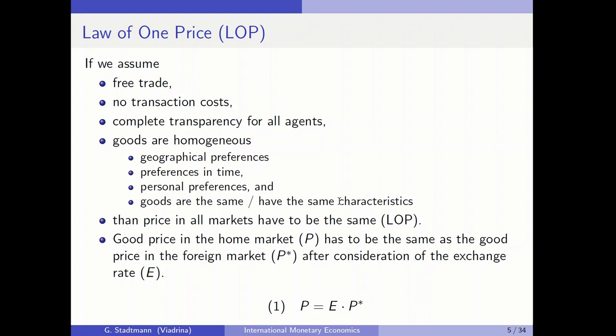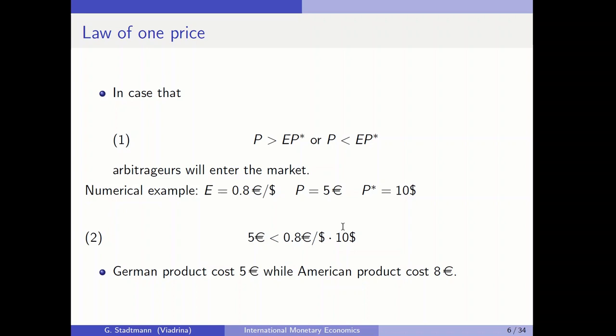If this equation does not hold, arbitrageurs will enter the market. For example, assume the exchange rate is 0.8 euros per dollar, the price in Germany is 5 euros, and the price in the US is 10 dollars. The US price after conversion is 8 euros. So the German product costs 5 euros while the American counterpart costs 8 euros. To profit from this, buy low in Germany and sell high in the US.